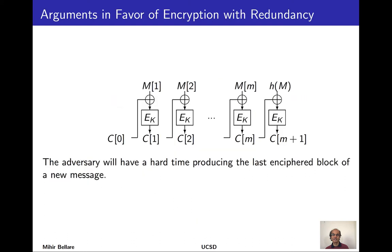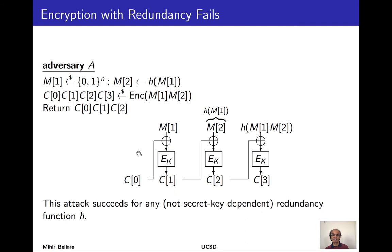The intuition is that if an adversary writes down some ciphertext and you decrypt under a key the adversary doesn't know, you get garbled nonsense, so the last block equaling h of the prior blocks is unlikely. Unfortunately, that intuition is completely wrong, and the attack we'll see works regardless of the choice of hash function — whether simple or complex — as long as it doesn't depend on the secret key.